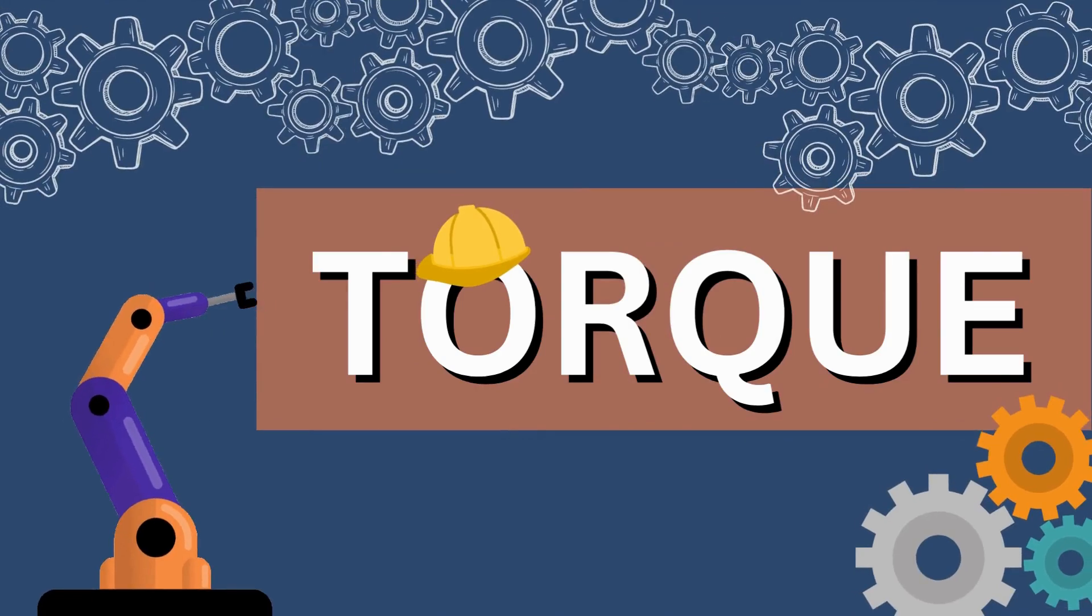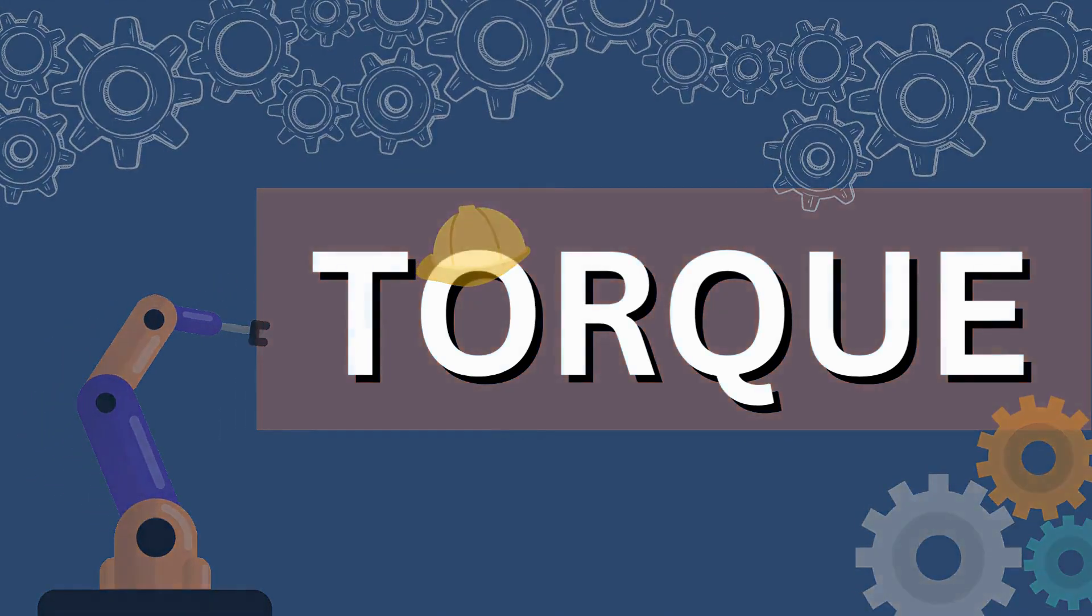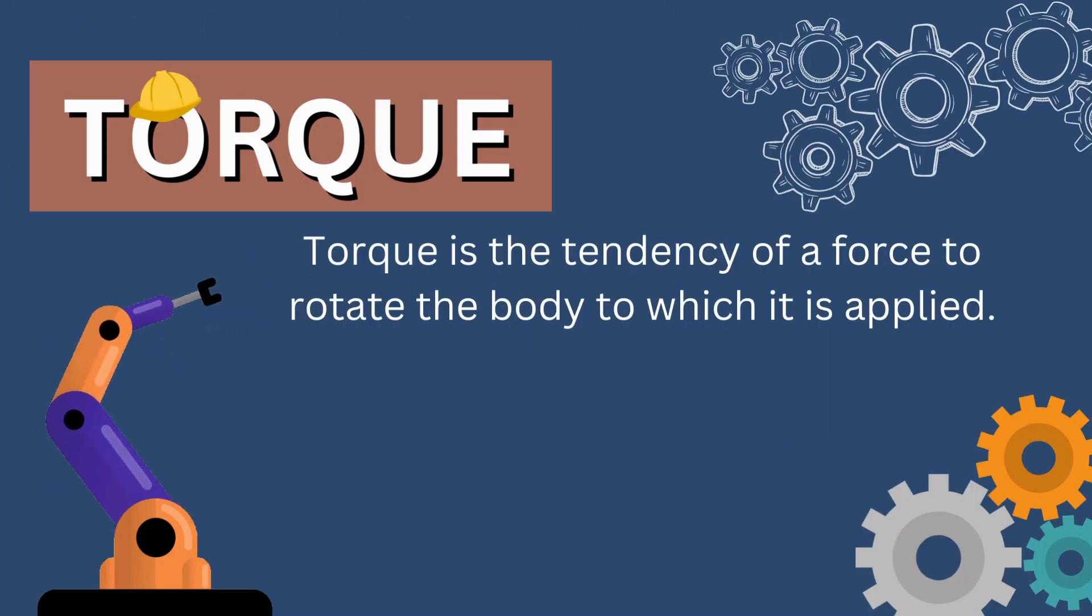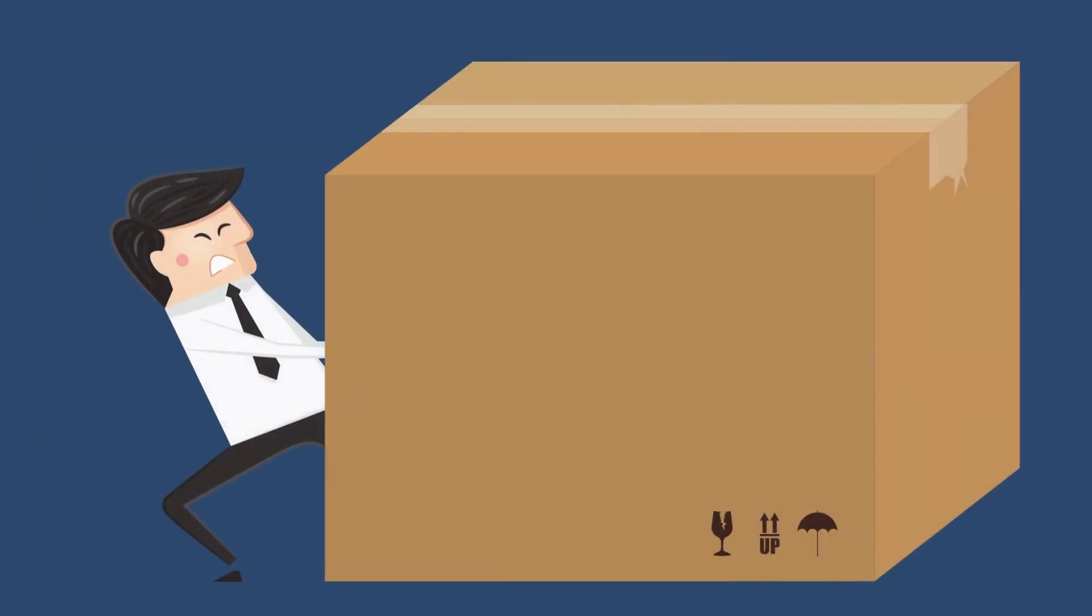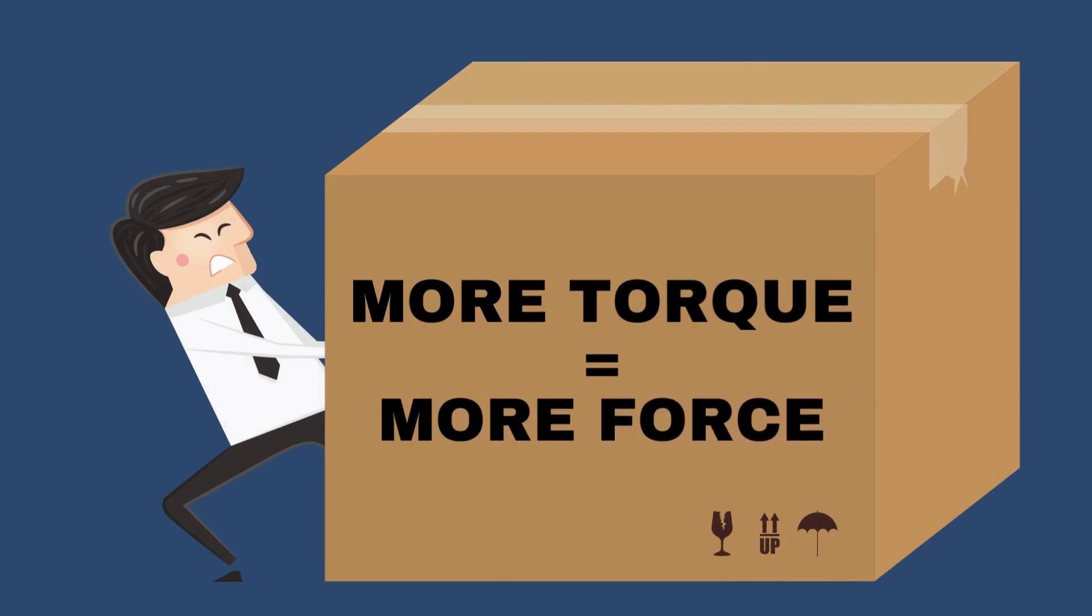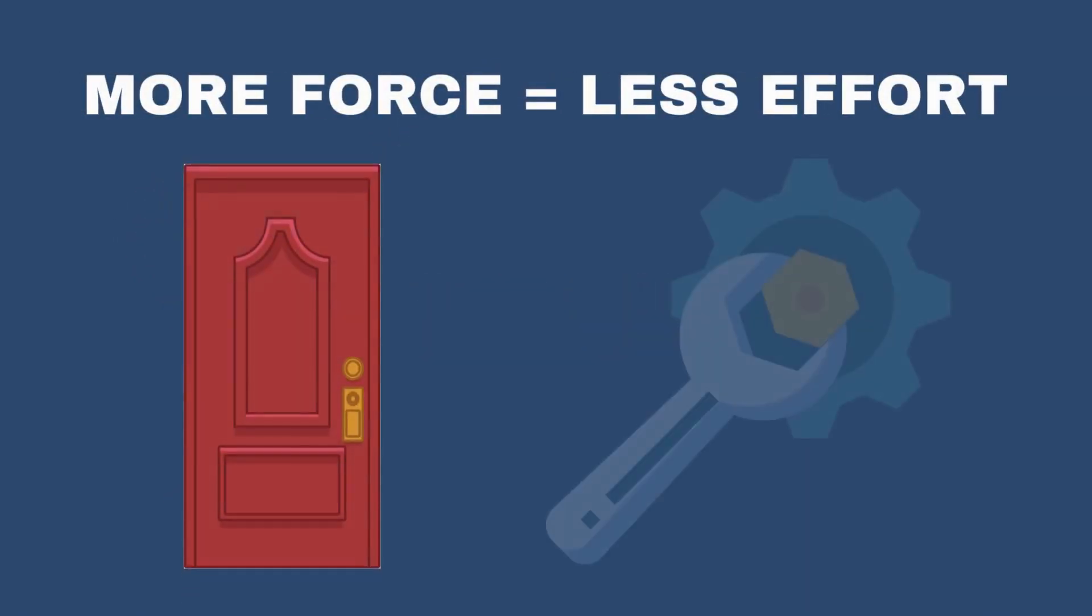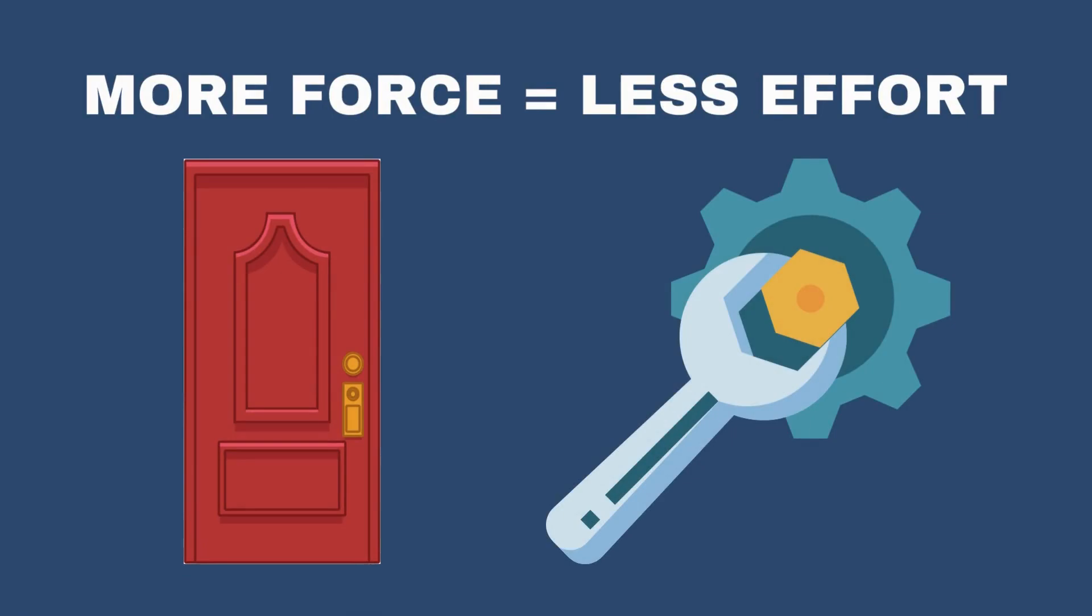The science behind this is called torque. Torque is the tendency of a force to rotate the body to which it is applied. We can simply say that the more torque we have, the more force we have to rotate an object. Having more force also means lesser effort when opening a door or turning the wrench.